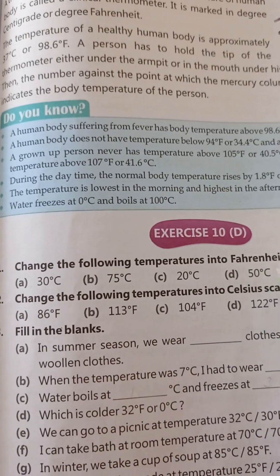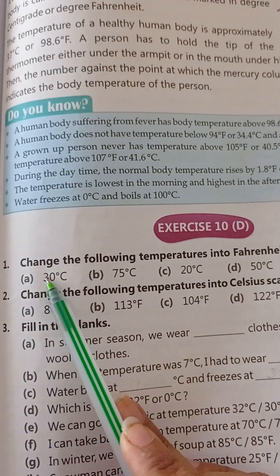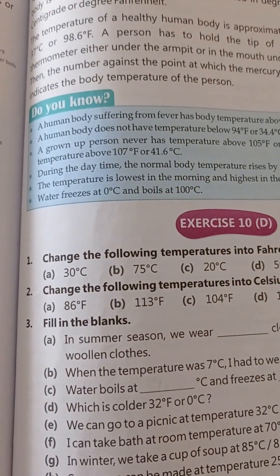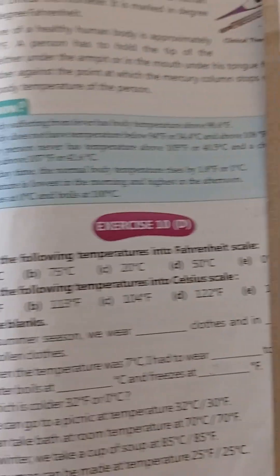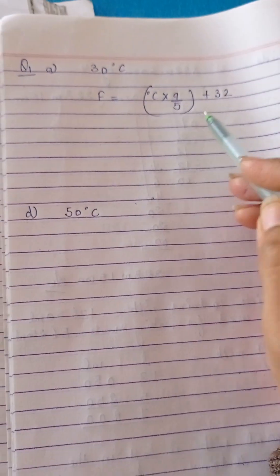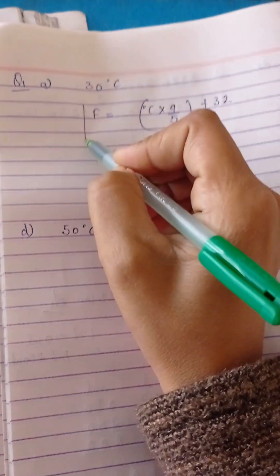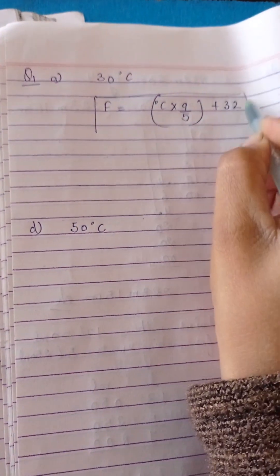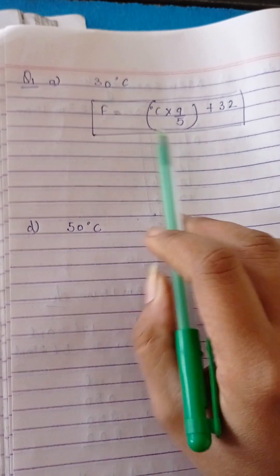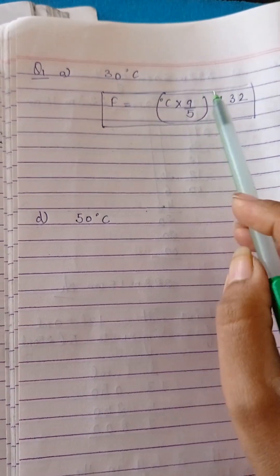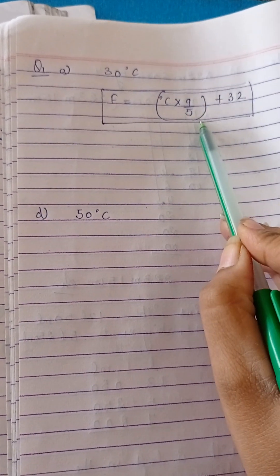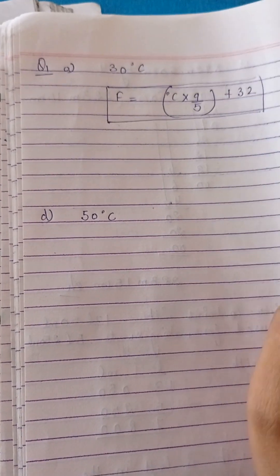Change the following temperature into Fahrenheit. The first part is 30 degree Celsius. This is the formula for conversion of degree Celsius into degree Fahrenheit: Fahrenheit is equal to degree Celsius multiplied by 9 upon 5, plus 32.